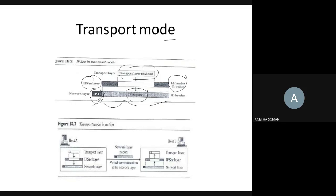The data from the transport layer, together with the headers and trailers added by the IPsec layer, is called the IP payload or IP data packet. An additional IP header is added at the network layer, but in transport mode, IPsec does not protect this IP header — it only protects what is delivered from the transport layer.